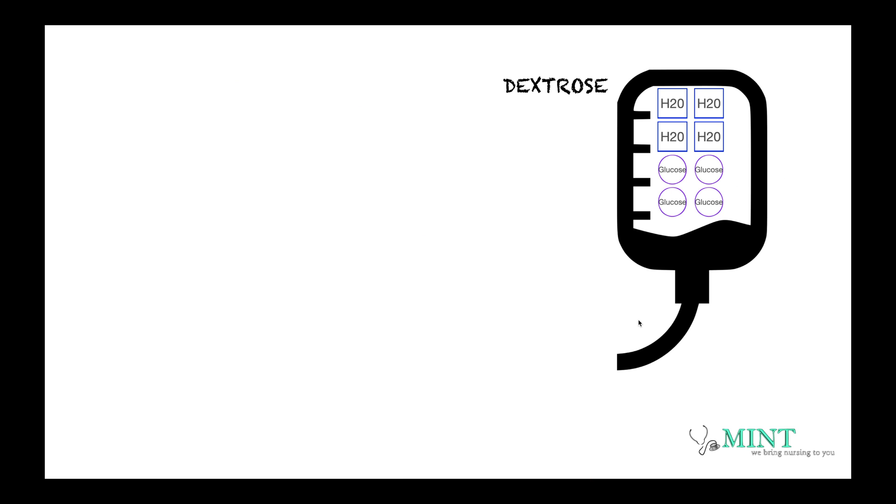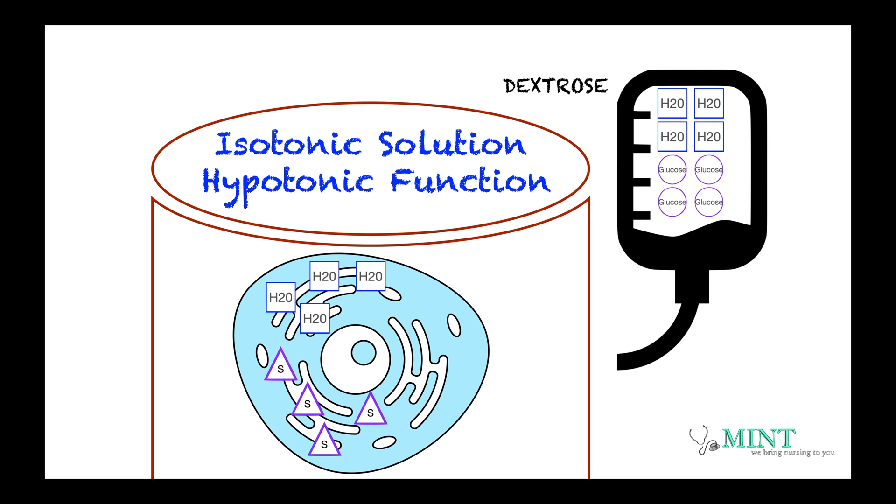Now in here, we can talk about our fluid D5W or the dextrose. It is basically an isotonic solution with a hypotonic function. So the way D5W is made in the bag is that it has equal amounts of water and equal amounts of solute. Now in this case, it is a dextrose. Our solute here is the glucose. So in the bag, it's technically an isotonic solution.